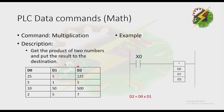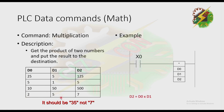From the table: if D0 is 25 and D1 is 5, D2 becomes 125. Then 5 and 1 gives 5. Then 10 and 50 gives 500. And 2 and 5 gives 10. That's how multiplication works.